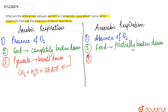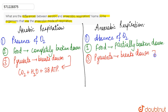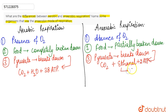Whereas in case of anaerobic respiration, when pyruvate breaks down in yeast, the end products produced are carbon dioxide, ethanol, and just two molecules of ATP.